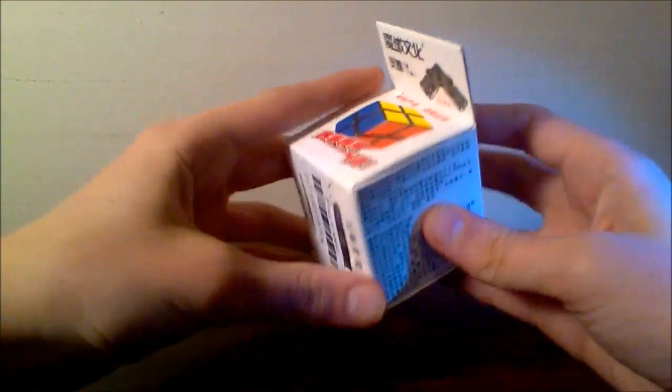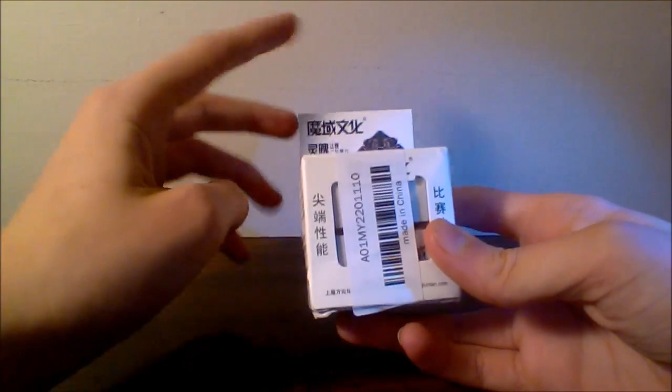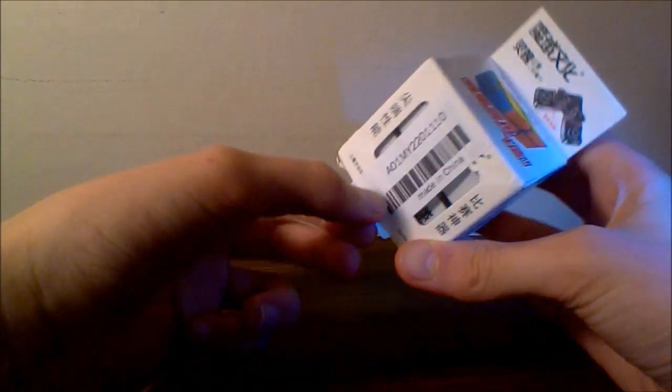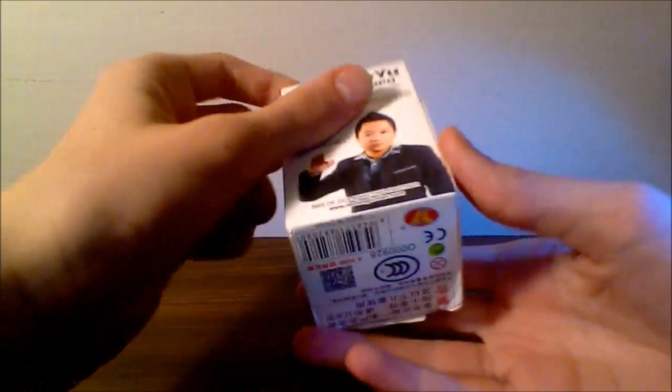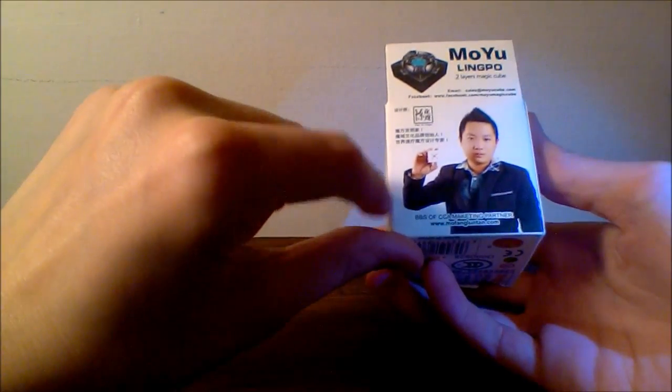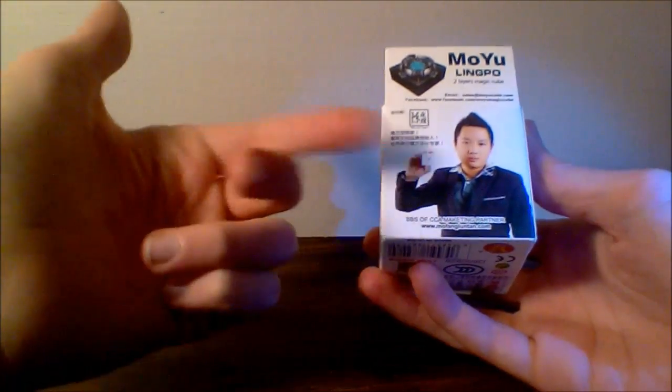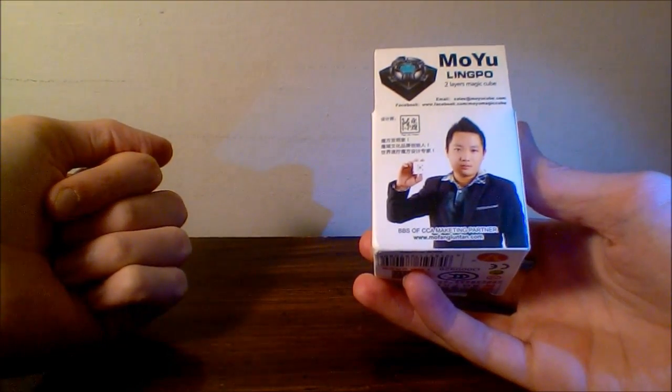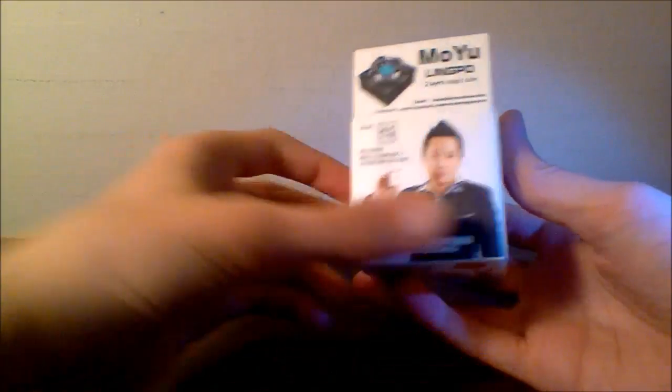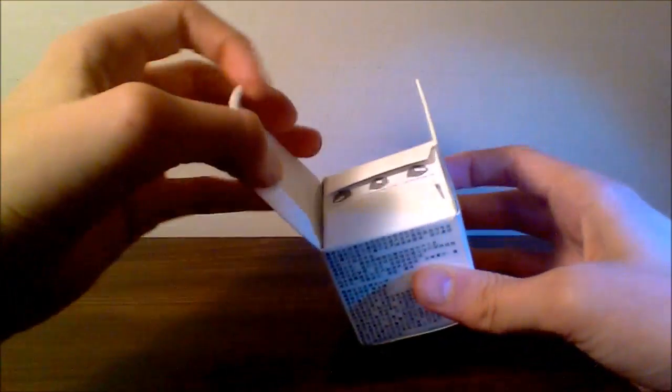Alright, so here we have the standard Moyu box with this little flap at the top window that has been covered up by this shipping sticker, which is rather unfortunate because we cannot really see the puzzle. Picture of a person on the back. It used to be Felix Zimdegs but they have since changed it. This is the Lingpo 2x2. Let's get it open.